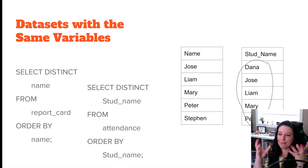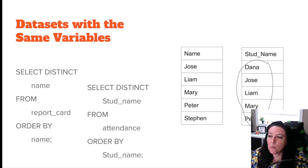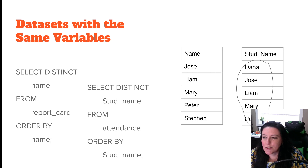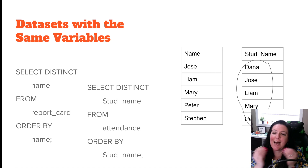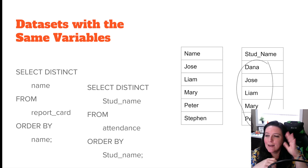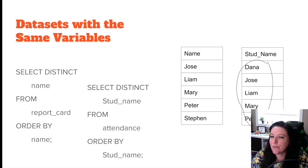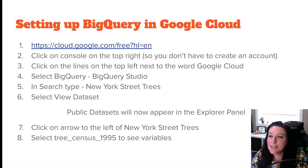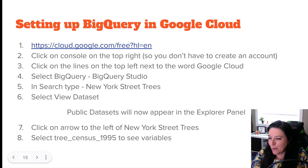Whenever you're merging datasets to pull data from different sources for analysis, you'll use a query to create a new table. To merge tables you need to figure out what they have in common — the foreign key that ties them together — and check they are formatted so the keys can match. Use SELECT DISTINCT to find how data is listed and verify you have a match. In the next video, we'll do this in Google Cloud using BigQuery.